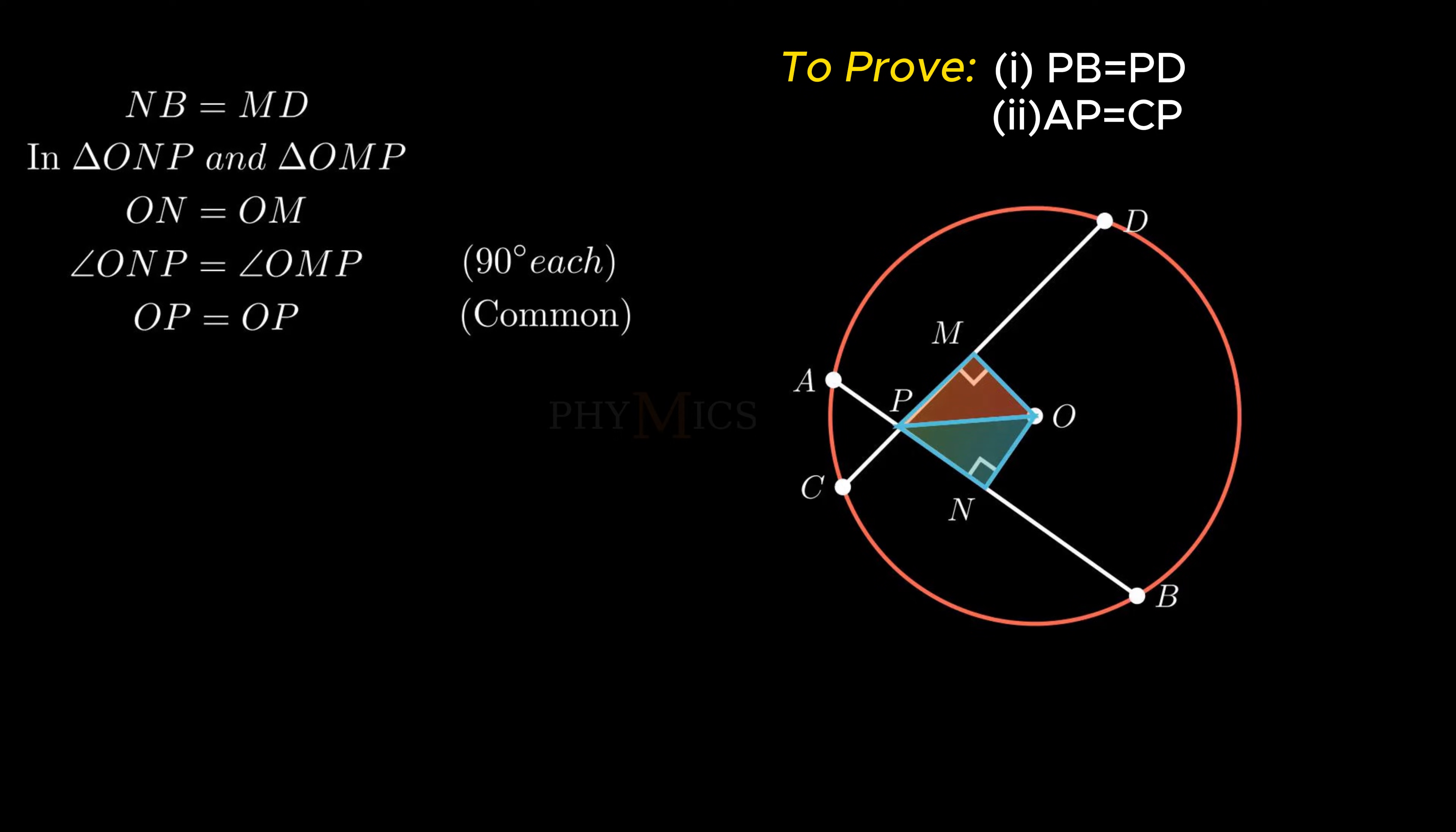Therefore, by RHS congruency, triangle ONP is congruent to triangle OMP. By corresponding parts of congruent triangle, we conclude segment NP is equal to segment MP.